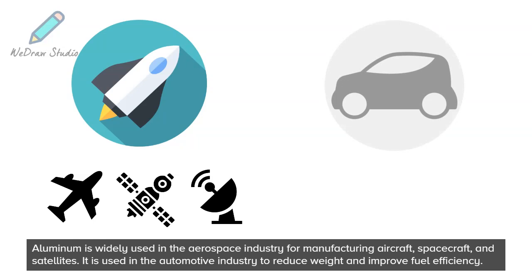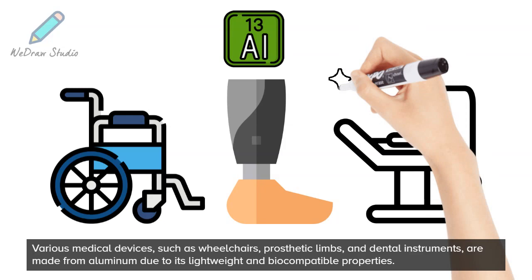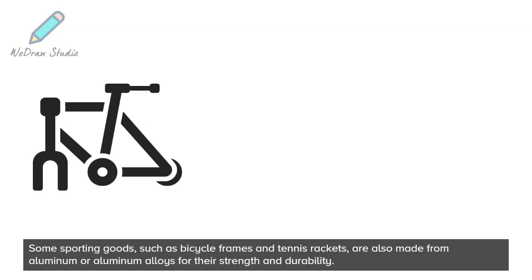Various medical devices, such as wheelchairs, prosthetic limbs, and dental instruments, are made from aluminum due to its lightweight and biocompatible properties. Some sporting goods, such as bicycle frames and tennis rackets, are also made from aluminum or aluminum alloys for their strength and durability.